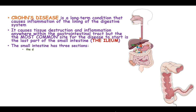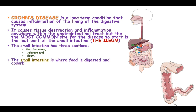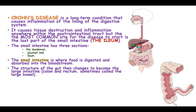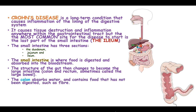The small intestine has three sections: the duodenum, jejunum, and the ileum. The small intestine is where food is digested and absorbed into the bloodstream, and the structure of the gut then changes to become the large intestine, known as the colon or sometimes the large bowel. The colon absorbs water and contains food that has not been digested, such as fiber.